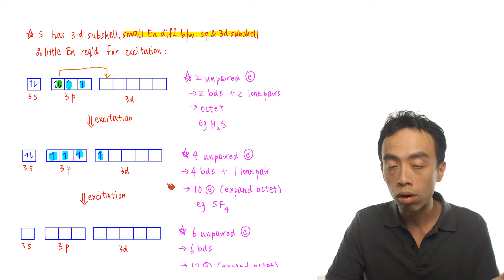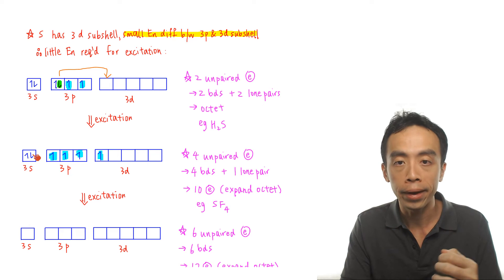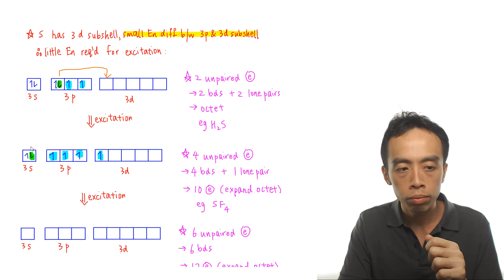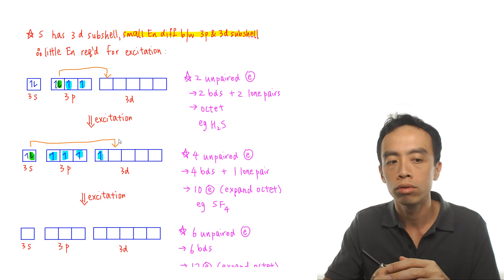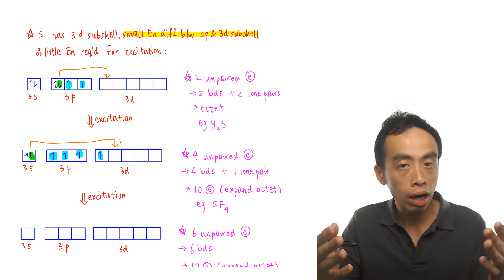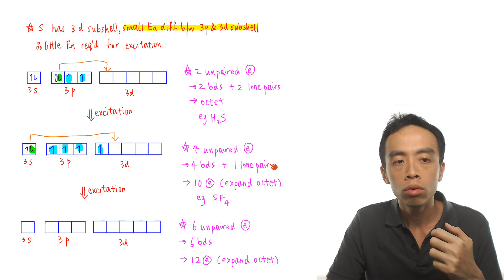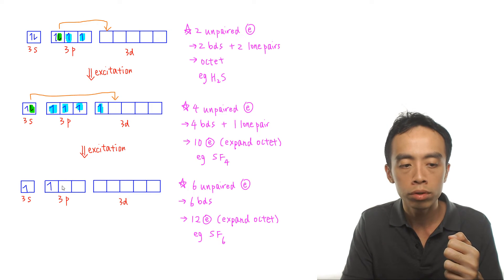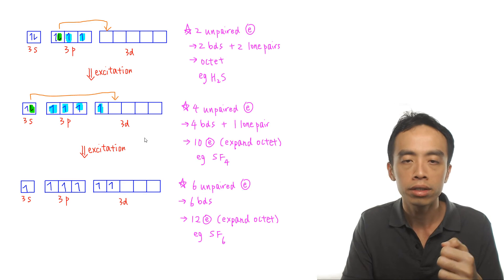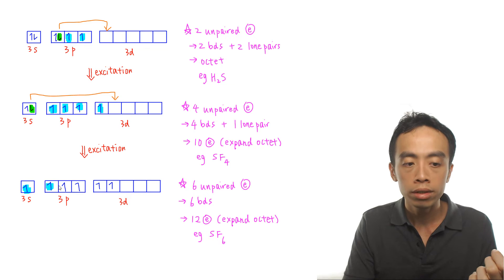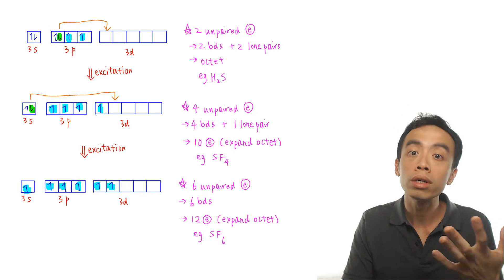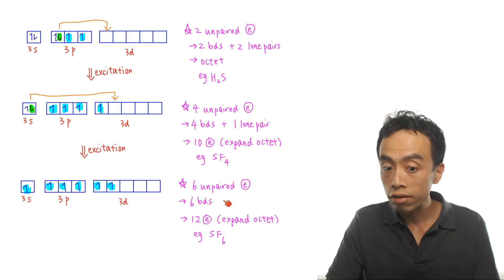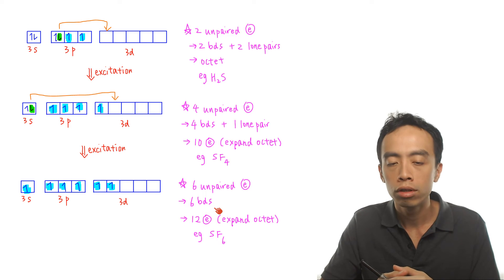Sulfur can actually do even more, because there is still one electron pair that can be unpaired. Taking that electron and promoting it into the 3d subshell means we now have 6 unpaired electrons: 1, 2, 3, 4, 5, 6. So the total number of covalent bonds sulfur can now form is 6, which gives a total of 12 electrons around its valence shell — again, expansion of octet.